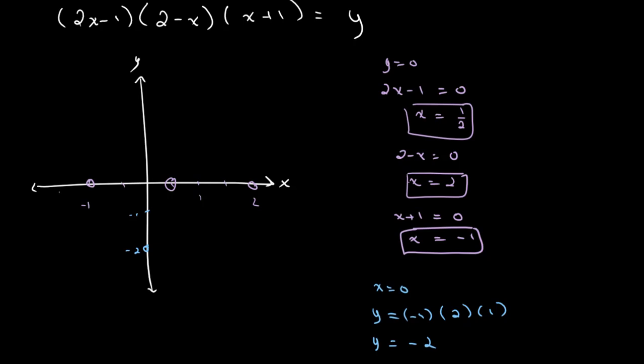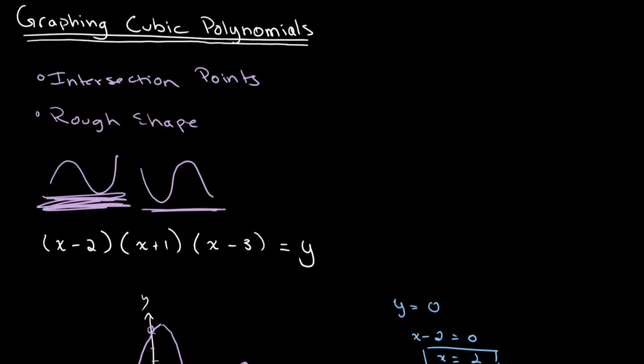Now all we need to do is connect the dots and see what shape our graph forms. It goes from negative 1 to the y-intercept at negative 2, then up to the point 1/2, then back down to the point 2. Looking at the possible shapes, it fits this second shape.